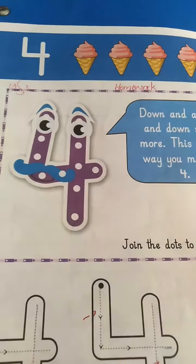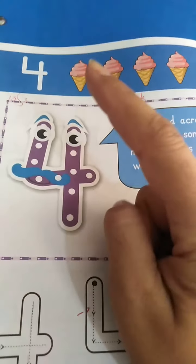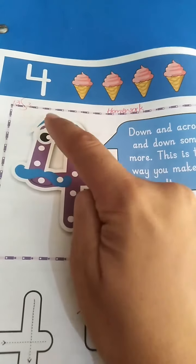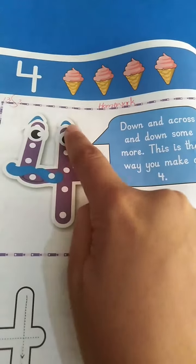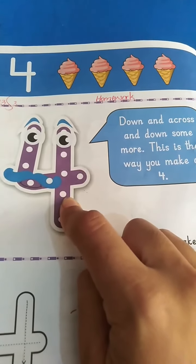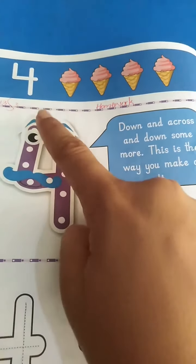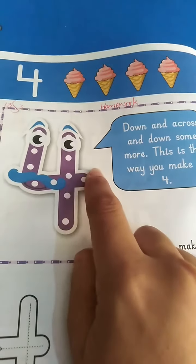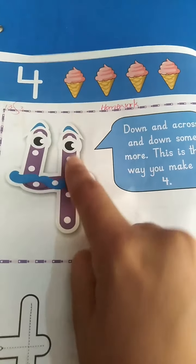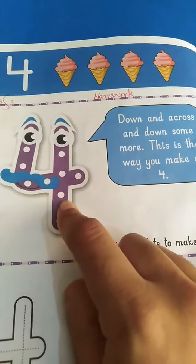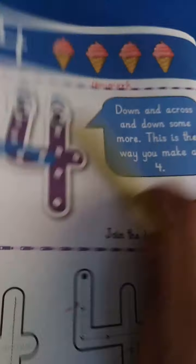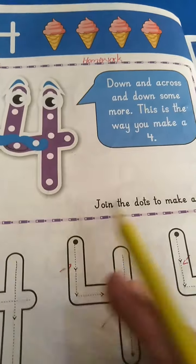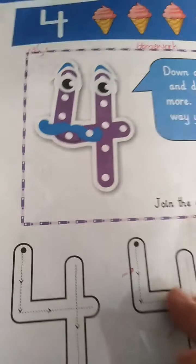Let's trace with me using your index finger. Put your index finger at this point — down and cross and down some more. It makes a number 4. It's so easy now. Let's join the dots to make a number 4.